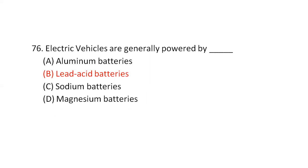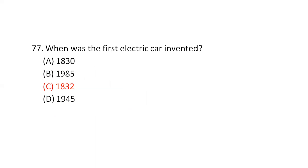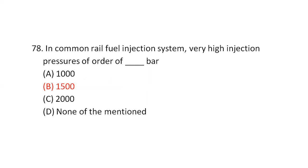Electric vehicles are generally powered by — option B — lead acid batteries. In the common rail fuel injection system, a very high injection pressure is used.